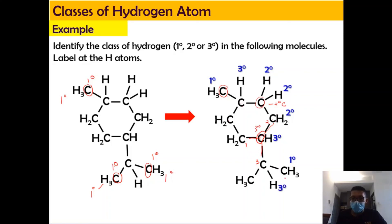Continuing: this carbon is primary, and this one is tertiary because it is connected to three carbons. This one is primary. This one is secondary because the carbon is attached to two others, and this one is secondary as well. So in order to classify hydrogen into its classes, you need to know the class of the carbon first — the hydrogen follows the class of the carbon. That's all for this video. I hope you find it helpful, and see you again some other time. Bye.